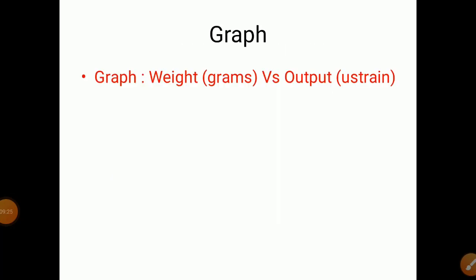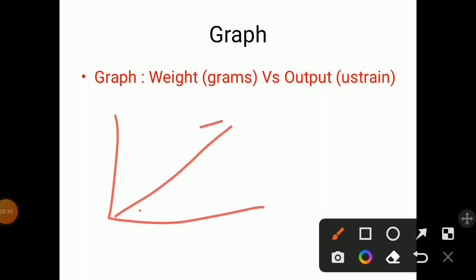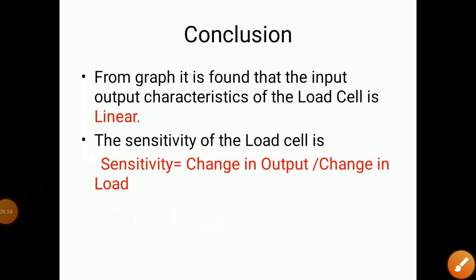From this data, we plot a graph with weight in grams on the x-axis and output in micro strains on the y-axis. The graph should be linear. From the graph, it is found that the input-output characteristics of the load cell are linear. The sensitivity of the load cell is calculated as change in output (micro strain) divided by change in load (input).